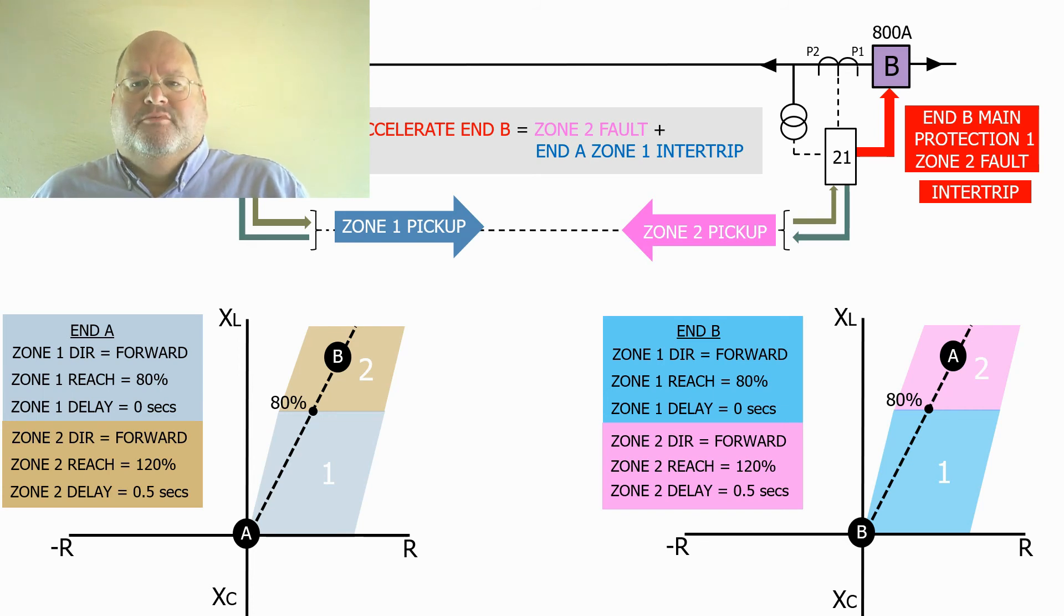What happens if we lose the communication system? Well, the scheme will then revert to its original mode, which is a delayed tripping on zone 2, i.e. a simple distance scheme.